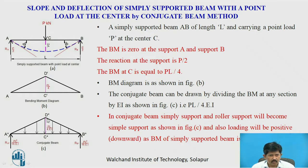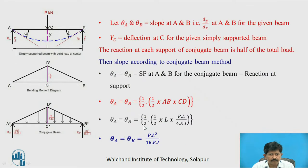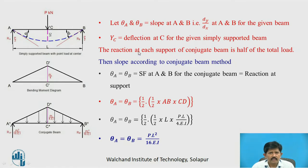The loading diagram on the conjugate beam will be PL upon 4EI. Simply supported and roller supported conditions in the real beam become simple supports in the conjugate beam, and since the loading is positive, it will act downward. Let theta A and theta B be the slopes at A and B. As the loading is symmetric, slopes will be equal at both supports. YC is the deflection at C, the center. The reaction at each support of the conjugate beam is half of the total load.